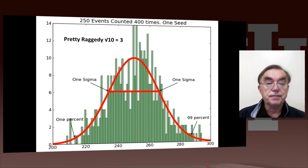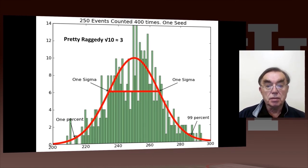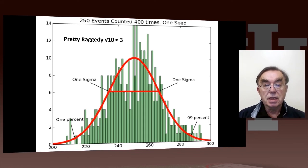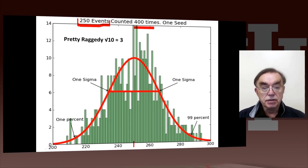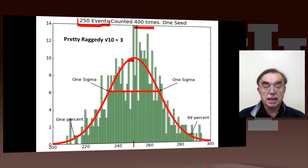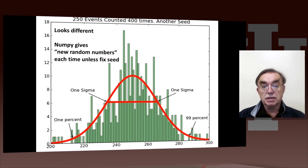This next and last set of slides shows what happens when you do smaller experiments. Instead of 10 million, we do 100,000 — we take 250 events and count them 400 times. We get this rather raggedy-looking graph. Here's the appropriate normal distribution, and here's our histogram with 250 events. It's pretty raggedy. The top is 10, and the square root of 10 is 3, so these results are not inconsistent with 10. You're just seeing the typical fluctuations you get in any experiment of this size. We can do another experiment by re-running the Python code, which gives different answers by default.